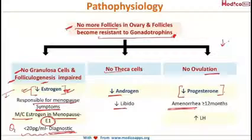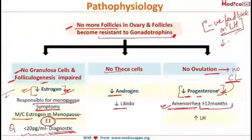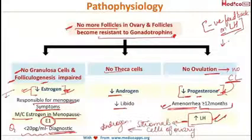For menses to occur, estrogen must rise to proliferate the endometrium, progesterone must act on it, and then when both decrease, menstruation follows. If estrogen and progesterone are decreased, there will be amenorrhea. When this amenorrhea persists for more than 12 months, we call it menopause. Progesterone has a negative feedback action on LH, so if progesterone decreases, LH levels will increase.